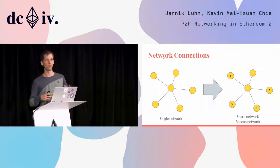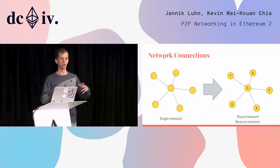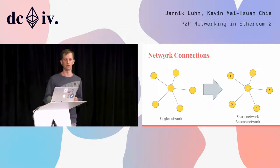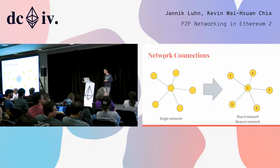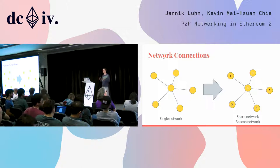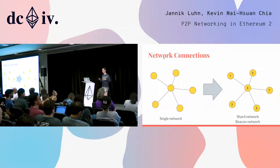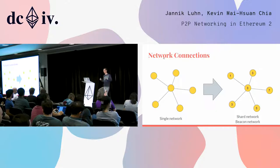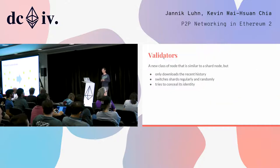In addition to shard peers, you also pick nodes from the global set that can provide you with beacon data — in this example nodes one and seven. We can essentially abstract from that: we now have two networks. One is the shard network, which consists of all nodes connected to a certain shard. And then we have the beacon network, which consists of all different nodes, and in this network only the beacon data is transmitted.